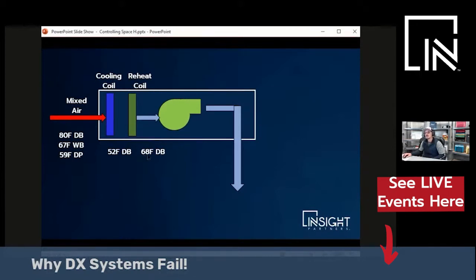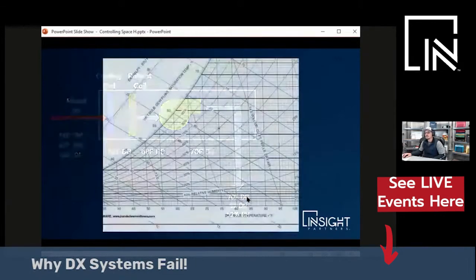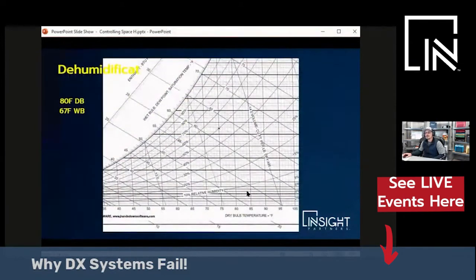We reheat it with the heating coil, let's say to 68. These are arbitrary example numbers. You pick up a few degrees with the fan. You blow this 70-degree air into the space, which is relatively warm. And everybody's good to go. So now you're dehumidifying the air and not freezing everybody out.